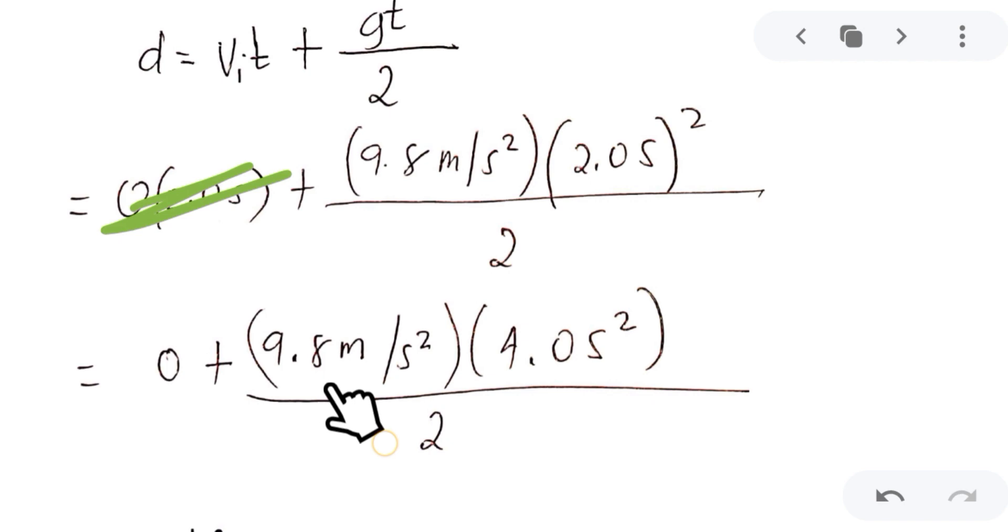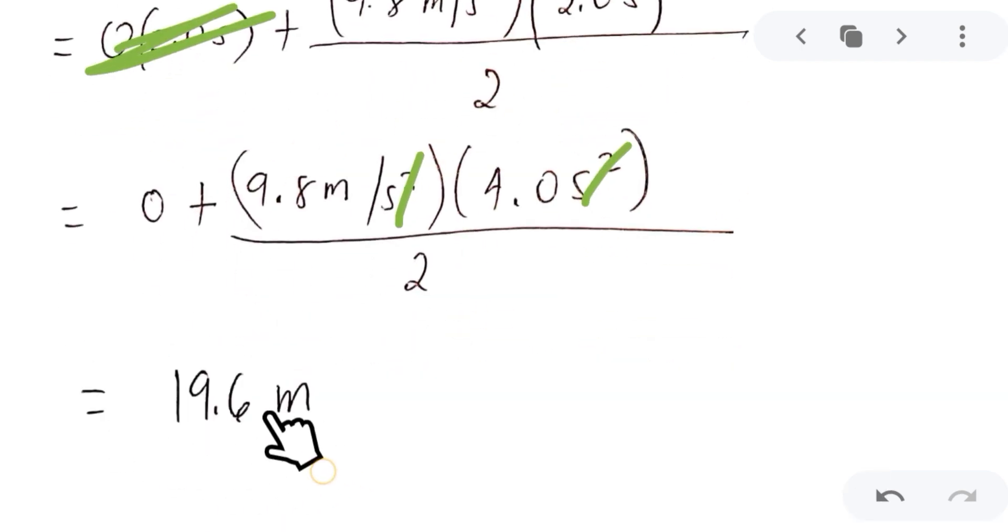And then you will have 9.8 meters per second squared. Square that. That will be 4. Second squared. Square as well the variable here. So cancel the second unit. Cancel the second squared. You will be left out with a meter unit. And then you will have 9.8 times 4 over 2. You will have 19.6 meters.